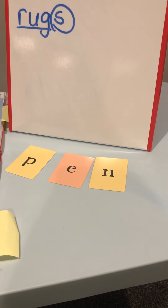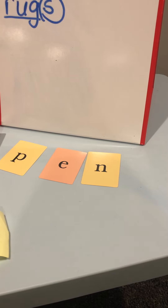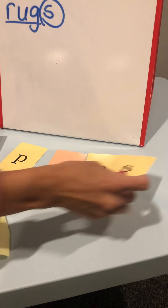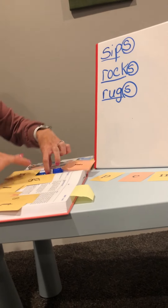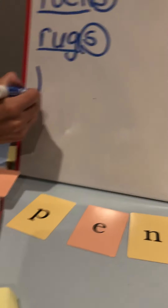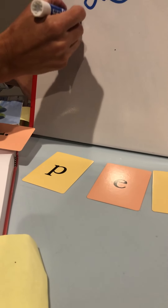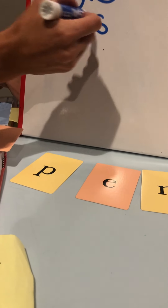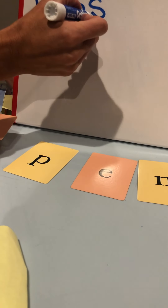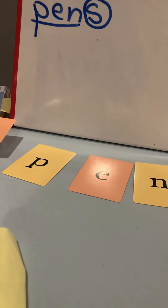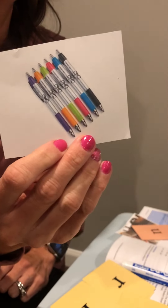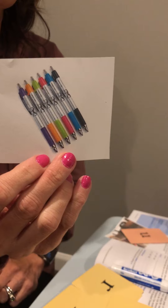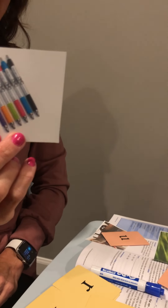Do you remember our first job? First job is to tap it out. Pens. So we write it here, underline the base word, circle the suffix, and it's more than one this time — not the verb. More than one pen. Pens. Your teacher has a lot of pens.